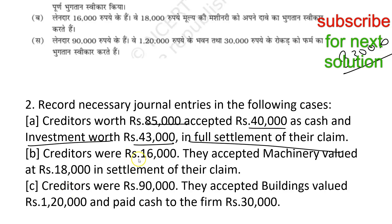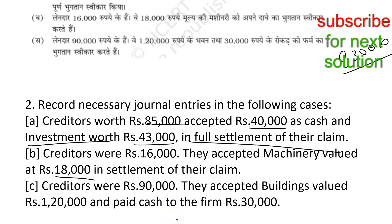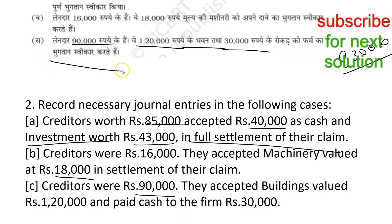Part B: creditors were Rs. 16,000; they accepted machinery valued at Rs. 18,000 in settlement of their claim. So Rs. 16,000 creditors are settled against machinery worth Rs. 18,000. Part C: creditors were Rs. 90,000; they accepted building valued at Rs. 1,20,000 and paid cash of Rs. 30,000 to the firm in full settlement of their claim.